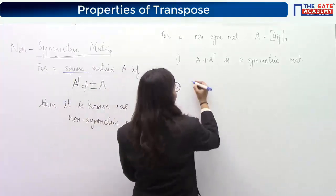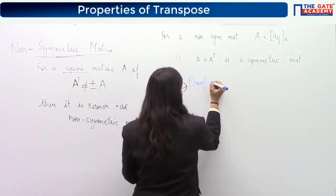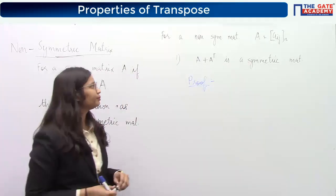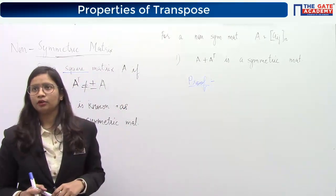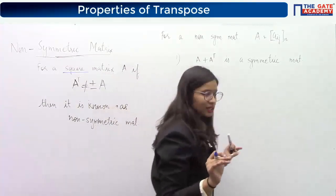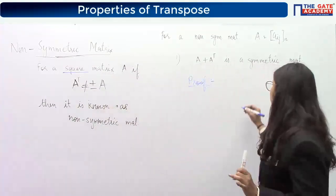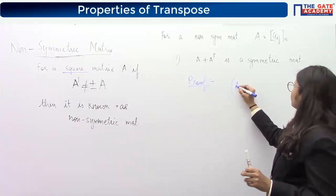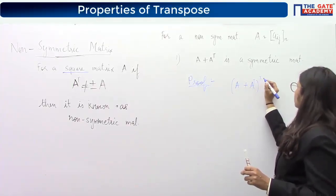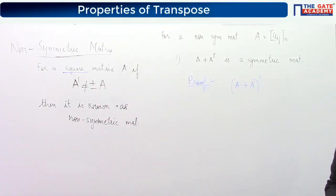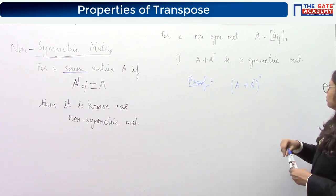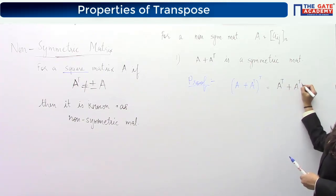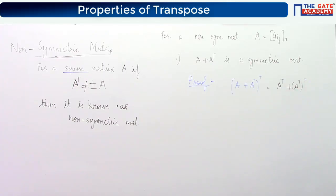A plus A transpose is always a symmetric matrix. Can you prove this? It is very simple. If it is a symmetric matrix, we know the condition: its transpose should be equal to the matrix itself. So let us find out what is the transpose of A plus A transpose. That is equal to A transpose plus A transpose's transpose.